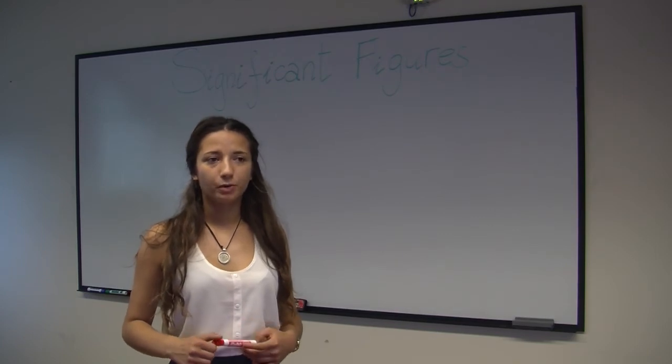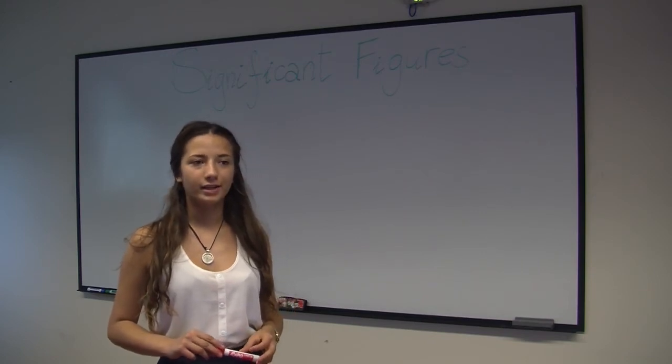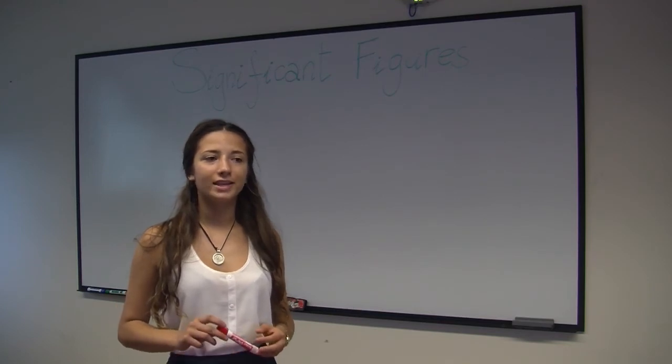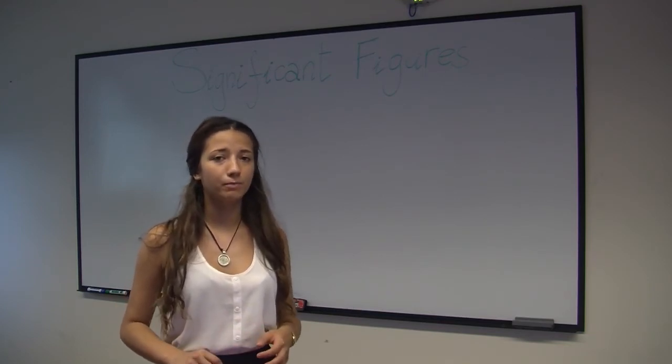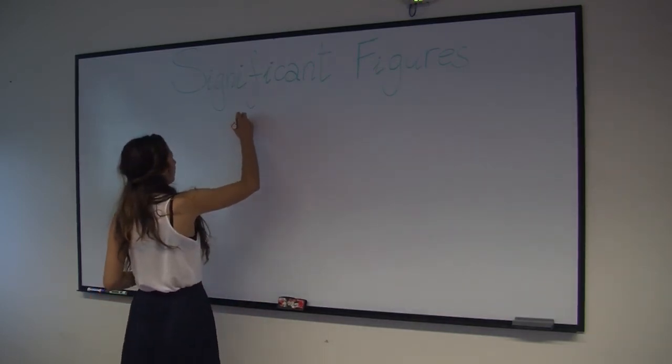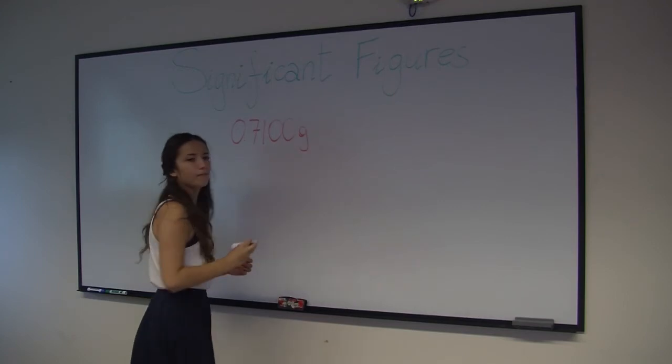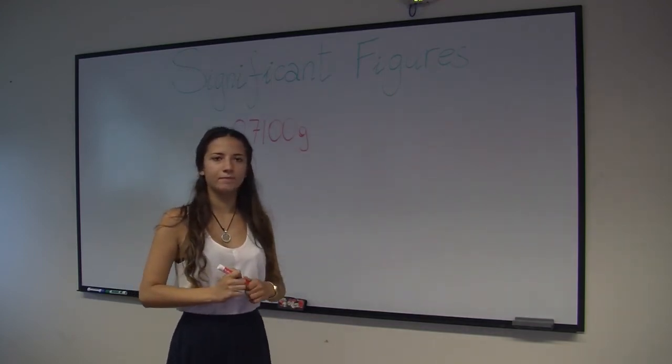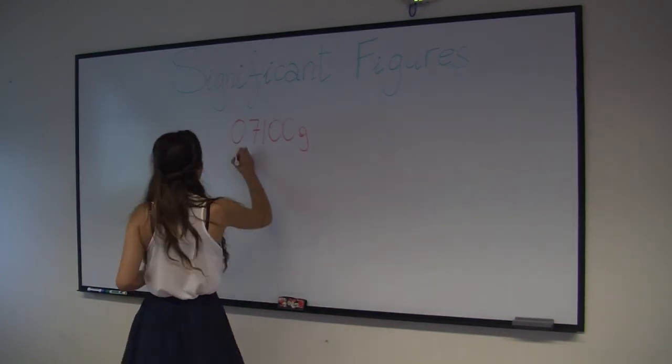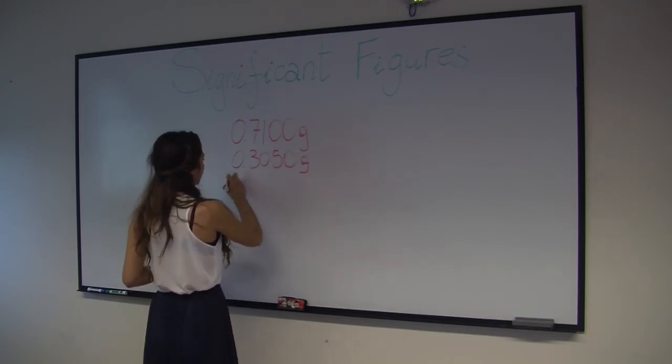Determining the number of digits to report when adding or subtracting is very easy. All you have to do is make sure that the number of decimal places stays the same. A measurement should not gain or lose precision when you perform a simple operation. As a simple example, let's say we measure out 0.710 grams of a substance using an analytical balance that has accuracy up to four decimal places. Then we add 0.3050 grams of the same substance.